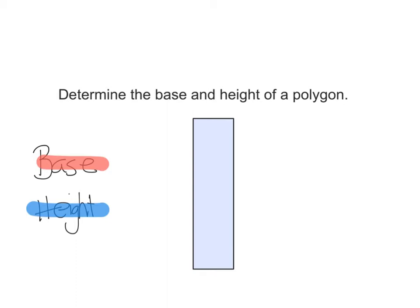So we can choose any side to be our base. However, I always like to choose the one that is at the bottom. It's not the definition, but it just looks the straightest for me to look at. So I have my base there, and then my height is a line extending 90 degrees out of the base.